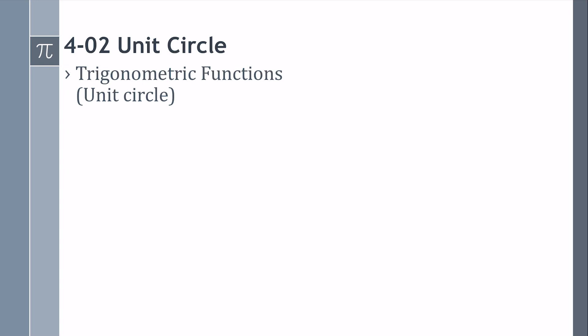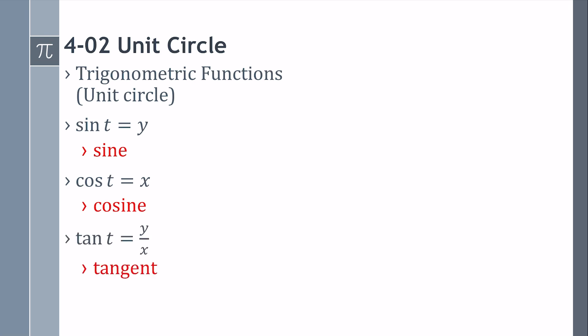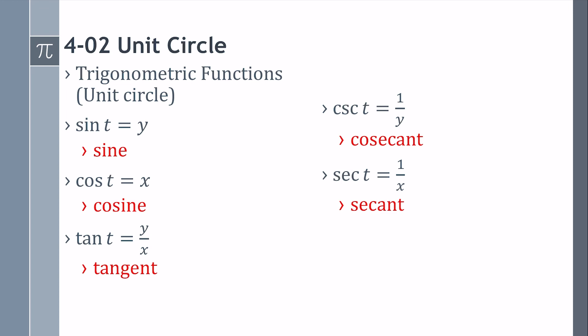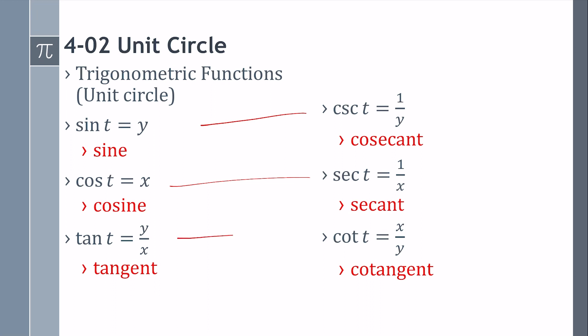There are trigonometric functions: sine, cosine, and tangent, but we're going to talk about them as on the unit circle. Sine of t equals the y-coordinate. Cosine of t equals the x-coordinate. Tangent of t equals y over x — the y-coordinate over the x-coordinate. Then we have cosecant, which is the reciprocal of sine — it's 1 over the y-coordinate. Secant is the reciprocal of cosine — 1 over x. And cotangent is the reciprocal of tangent. So these are reciprocals of each other.